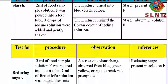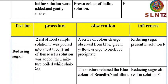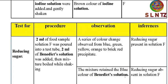For the reducing sugar test: '2 ml of food sample solution F was poured into the test tube and 2 ml of Benedict's solution was added, then the mixture was heated while shaking.' Note: 2 ml of sample and 2 ml of Benedict's solution — the amounts should be equal. Observation: color change from blue to green, yellow, orange, to brick red — reducing sugar present. If absent, 'the mixture retained the blue color of Benedict's solution.'